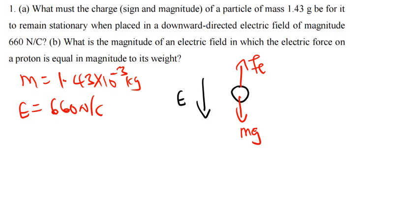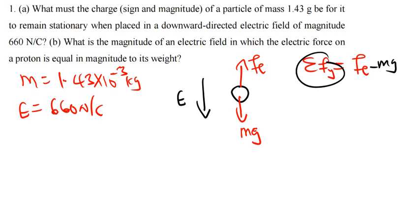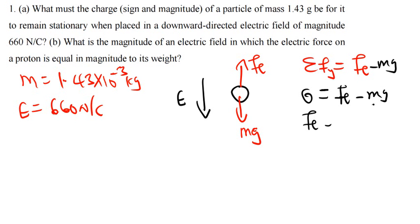We are trying to find the magnitude. If the charge is stationary, the summation of all forces in the y-direction equals zero. The electric force Fe is pointing upward, assigned as positive, and mg is pointing downward, assigned as negative. According to Newton's second law, since it is stationary, the net force is zero. So: 0 = Fe − mg, which gives us Fe = mg.